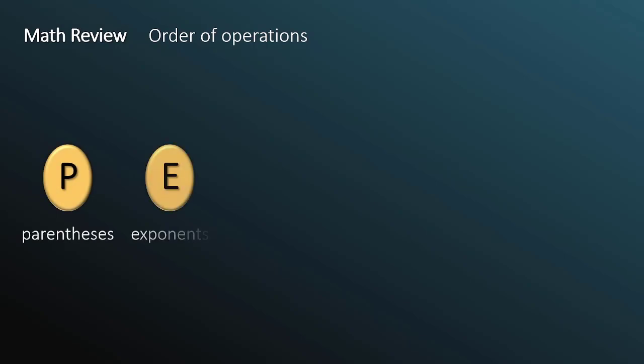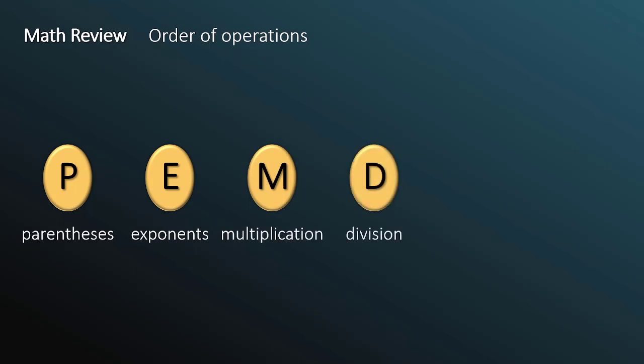So we will review some basic math in this lecture. Firstly, the order of operations. P for parentheses, E for exponents, M for multiplication, D for division, A for addition, and S for subtraction. This is the order of operations that you've probably seen many times before.